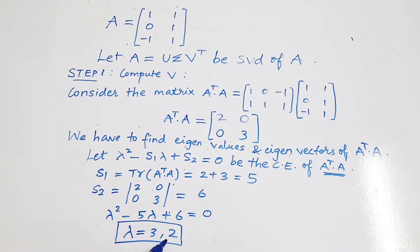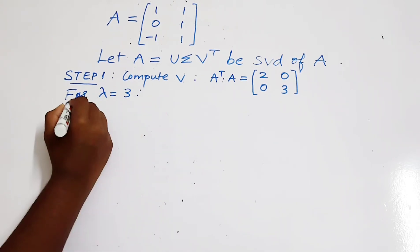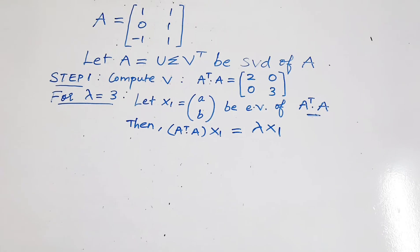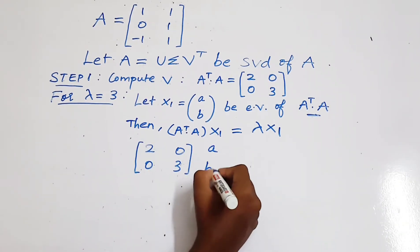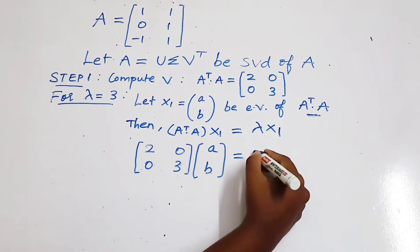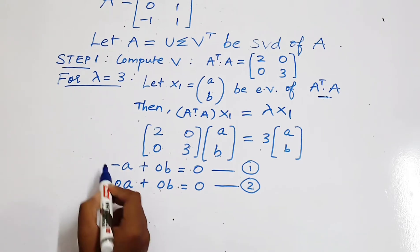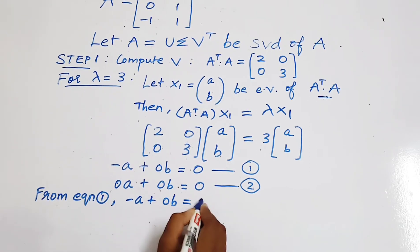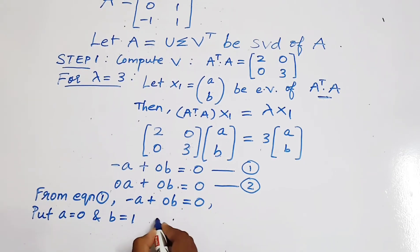For SVD we have to write the eigenvalues in decreasing order. Next we will find the eigenvectors for the corresponding eigenvalues. I have taken x1 as the eigenvector, so A transpose A times x1 must equal lambda times x1. We obtained 2 equations after solving this. Since both equations are the same, consider equation 1 and put random values for A and B. Taking A as 0 and B as 1 satisfies both equations, so the eigenvector obtained is [0, 1].